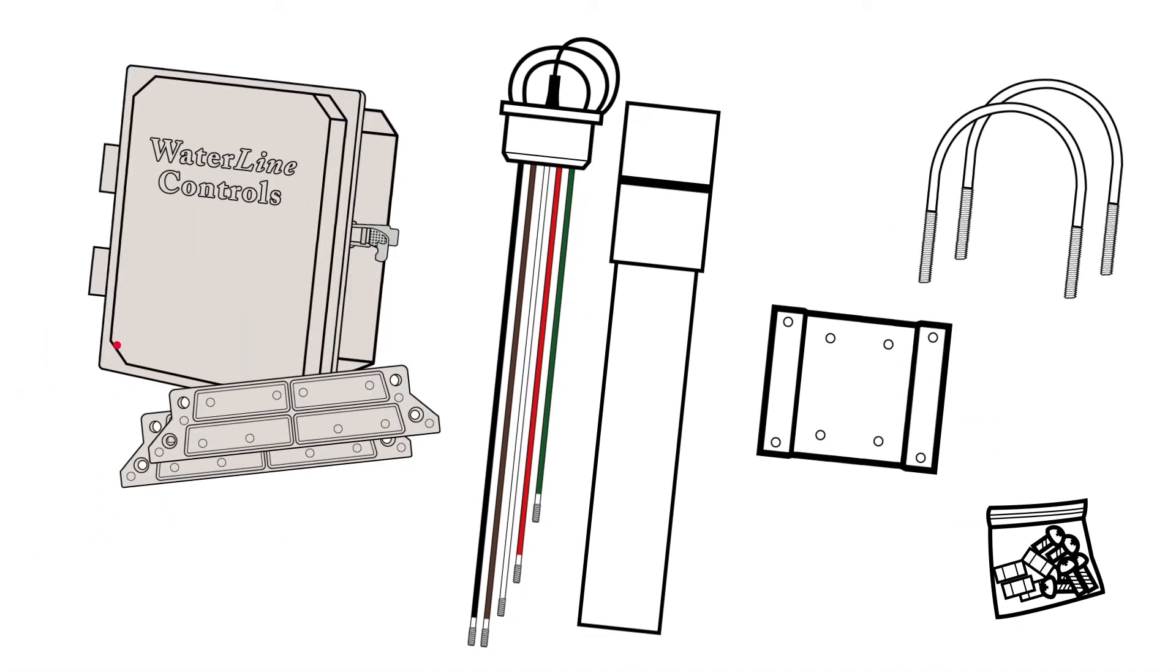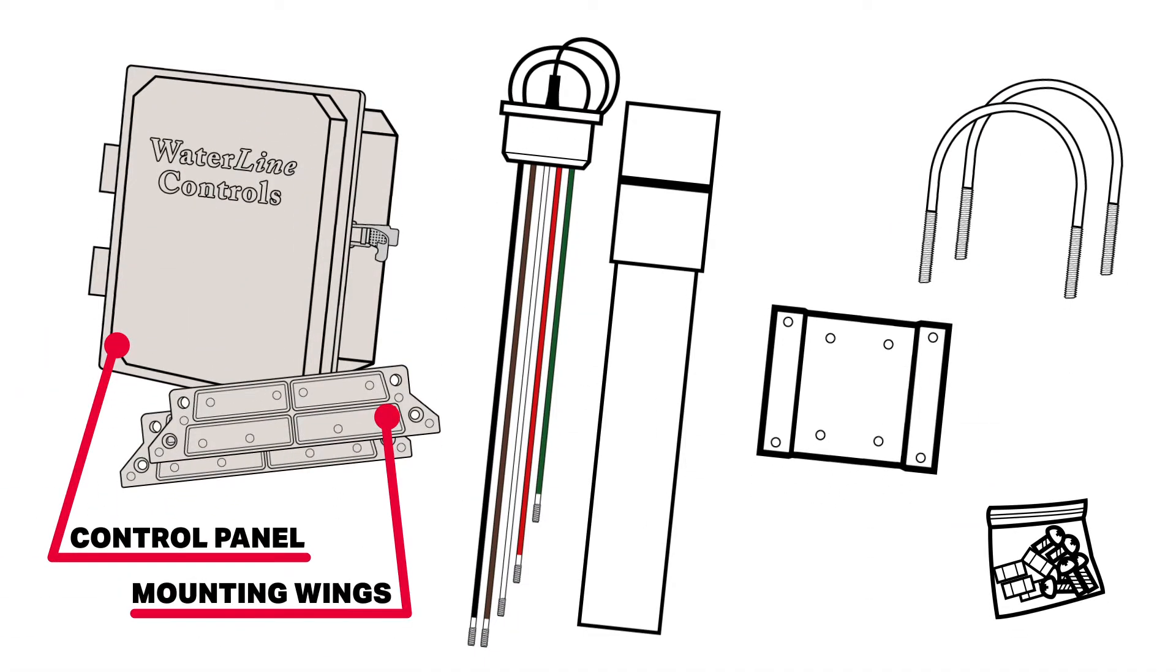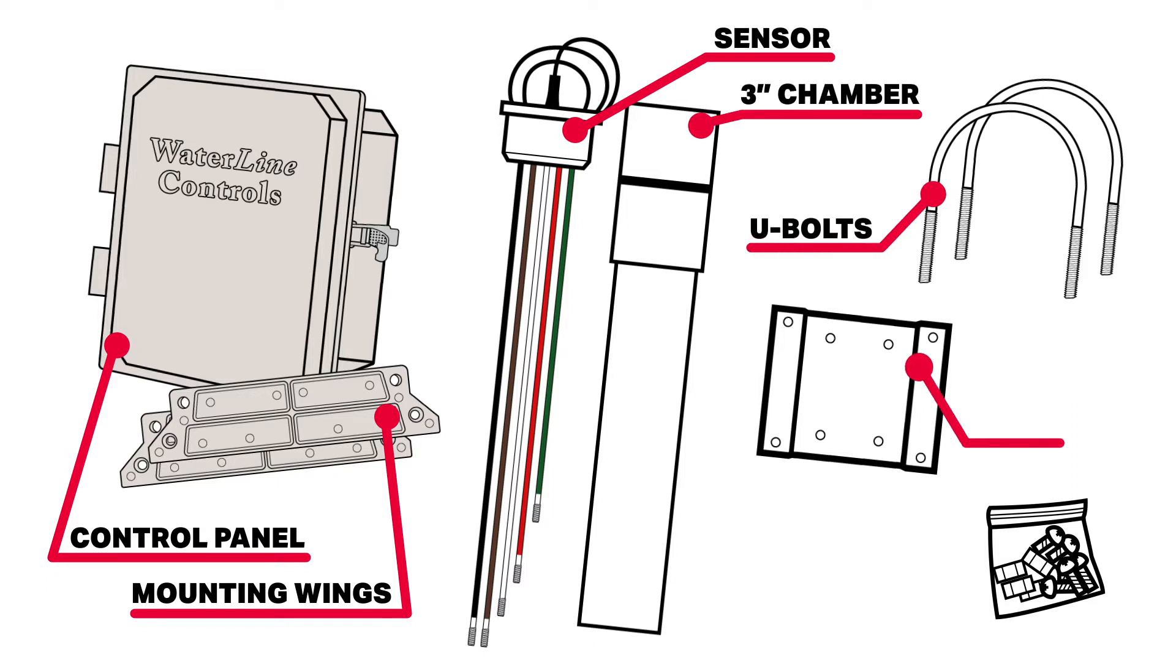Your waterline controls kit includes the panel with two mounting wings, the sensor with 50-foot multi-conductor wire, a 3-inch mounting chamber, U-bolts, mounting bracket, and hardware kit.